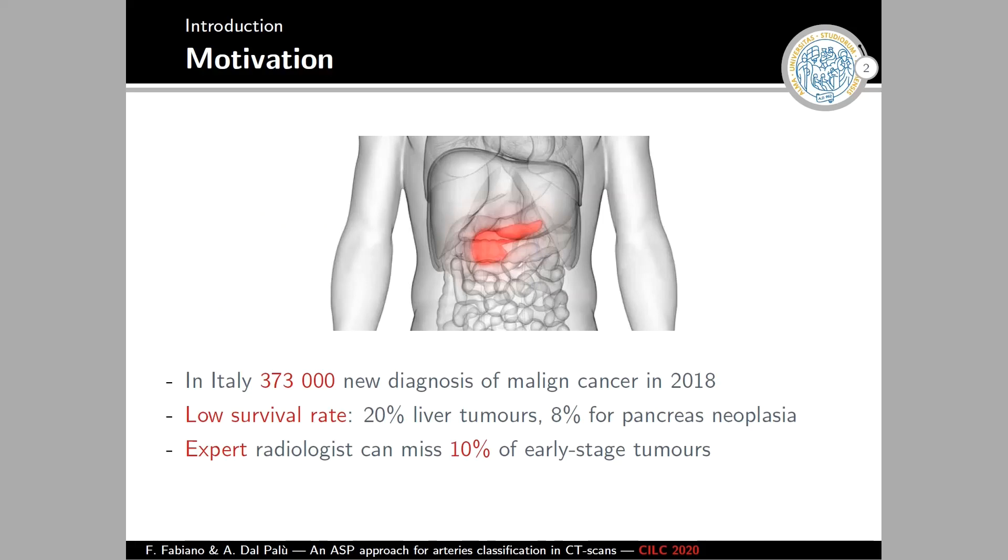Okay, let us start by providing some motivation for our work. In Italy, in 2018, almost 400,000 new tumors were diagnosed. And the problem is that each one of these tumors is associated with a really low survival rate. Let's take for example the pancreas one that is only 8%. And this survival rate is greatly affected by the detection of the tumor. Because if the tumor is detected early enough, then the patient can be operated increasing drastically its chance of survival.